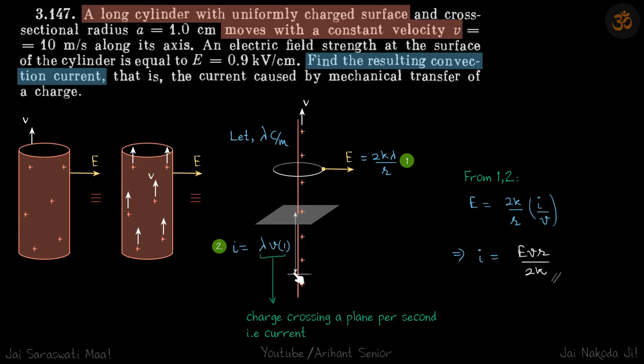The charge which is located at a distance V means this distance is V and the charge on all this then becomes lambda into V. Lambda V charge crosses the plane per second. That is the definition of current.